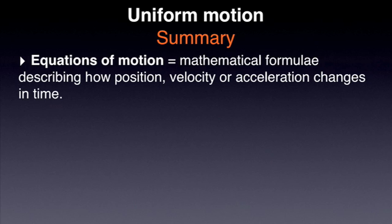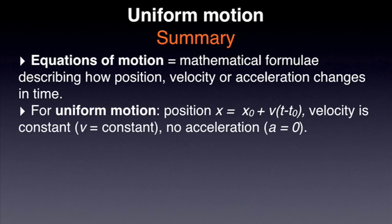Let's now recap the main points in today's podcast. Equations of motion are mathematical formulae describing how position, velocity, or acceleration changes in time. In the specific case of a uniform motion, the equation of motion that gives us the position of the moving body is x equals x0 plus v multiplied by t minus t0. The velocity is a constant and there is no acceleration.